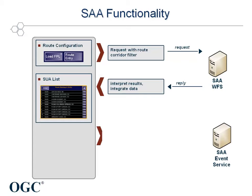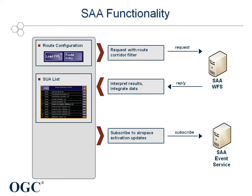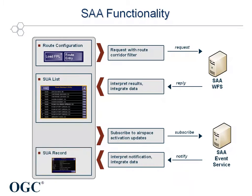In addition, a subscription based on the same geographical filter for airspace reservation updates is registered with the Event Service. When a new airspace activation is published, the Event Service notifies E-Route Manual, and the airspace reservation is integrated into the airspace record.